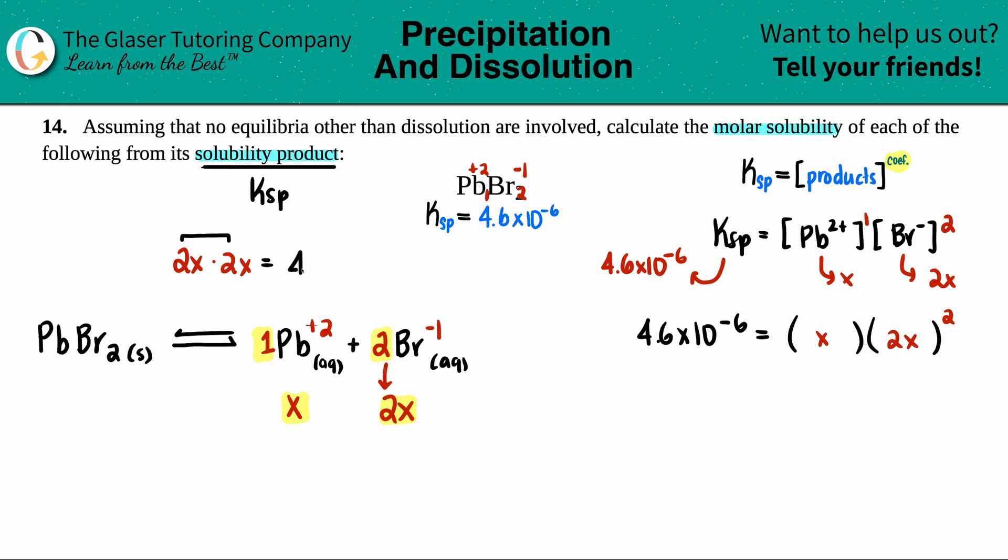Multiply the numbers first. Two times two is four. And then pick up how many X's you have. You literally have two X's. So that's an X squared. So I can just simplify that 2X squared is the same as 4X squared.